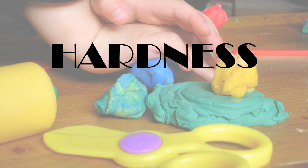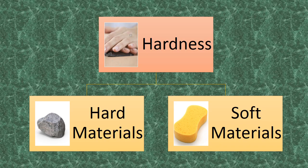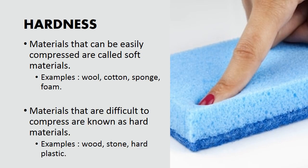The next property is hardness. Hardness is the property or quality of a substance to resist compression — meaning how much you can press that particular substance. Based on hardness, materials can be grouped into two categories: hard or soft. Materials that can be easily compressed or pressed are called soft materials — for example, wool, cotton, sponge, and foam. Materials that are difficult to compress are known as hard materials — for example, wood, stone, and hard plastic.